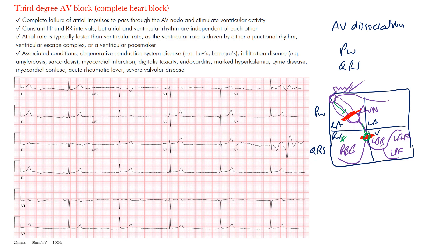Third-degree block is the endpoint of second-degree AV block — Mobitz type one and two. If things progress this far, this is what you get. This represents conduction failure above (Mobitz type one) or below (Mobitz type two) the AV node.